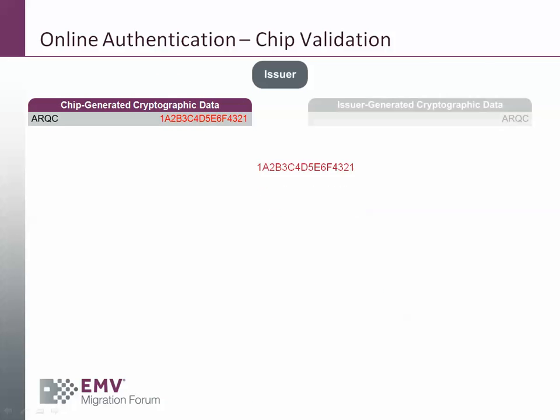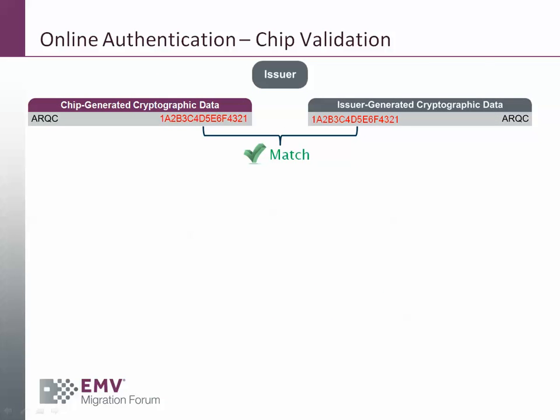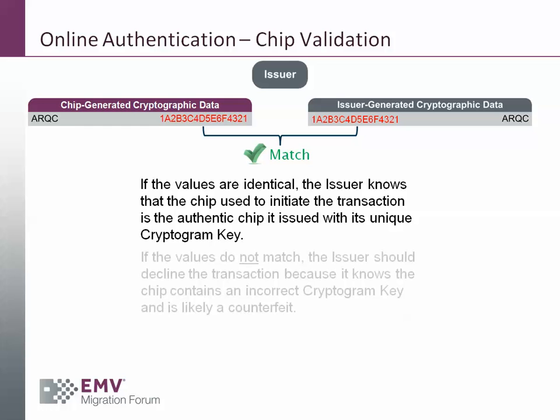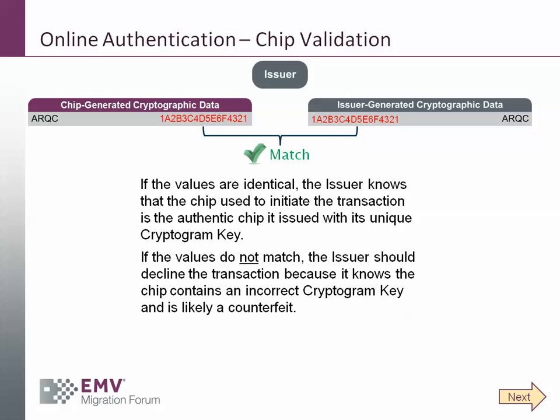This cryptogram is then compared with the ARQC that was generated by the chip and received in the authorization request. If the values are identical, the issuer knows that the chip used to initiate the transaction is the authentic chip it issued with its unique cryptogram key. If the values do not match, the issuer should decline the transaction because it knows that the chip contains an incorrect cryptogram key and is likely a counterfeit.